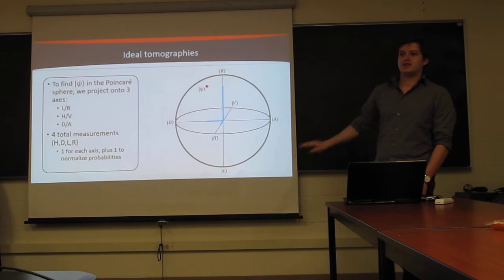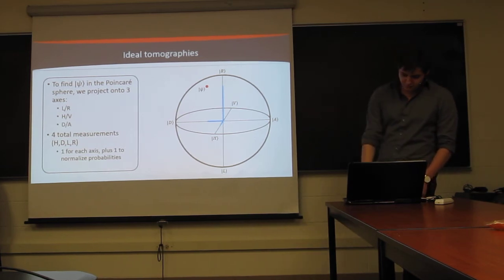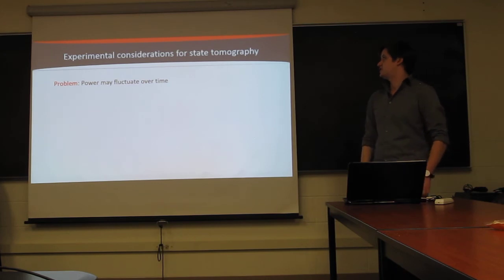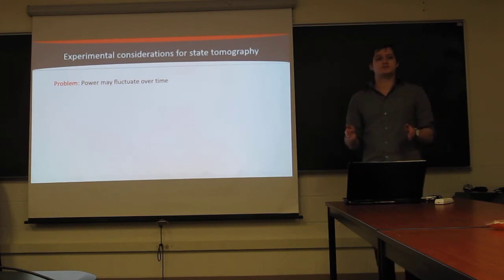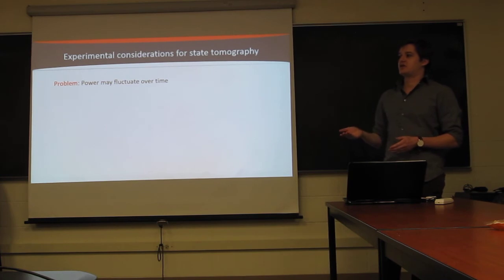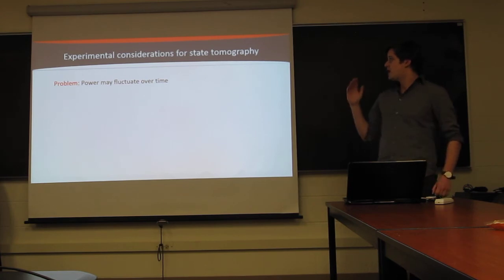But, like I said, this is completely ideal. This is assuming you have no Poissonian statistics of light, no imperfections in your system, nothing. So, there are some experimental considerations to be taken into account here. The first problem is simply that your power may fluctuate over time. So, for example, if you measure your L, project onto L, and then say you have 100 microwatts going through your system, then you switch to your R measurement, but suddenly the power from your laser drops because power goes weird or something, and you only have 50 microwatts coming through.